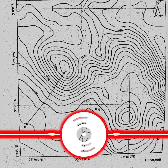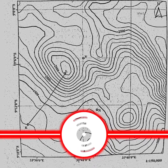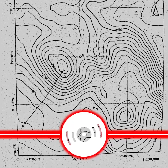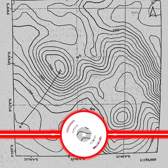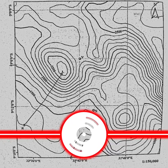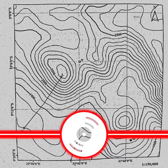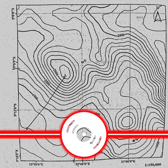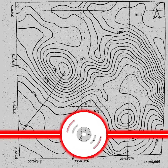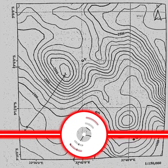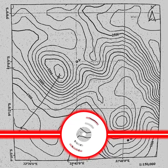Question number one: from the map, what is the geographic grid of point V? In order to answer this question you have to know the procedure. You have to identify the line that runs from north to south or south to north, which is known as the easting line, found at the left side of point V, and pick the large number named with the line.